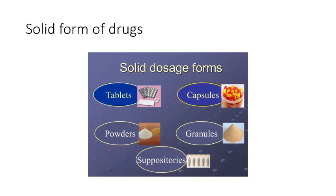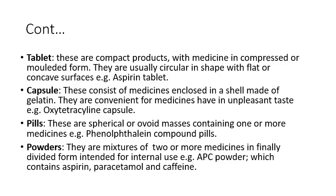Next are solid forms of drugs, which include tablets, capsules, powders, and granules. Suppositories are also a solid form of drug but we will discuss them under rectal route drugs. A tablet is a compact product where medicine is in compressed or molded form. Tablets are usually circular with flat or concave surfaces.